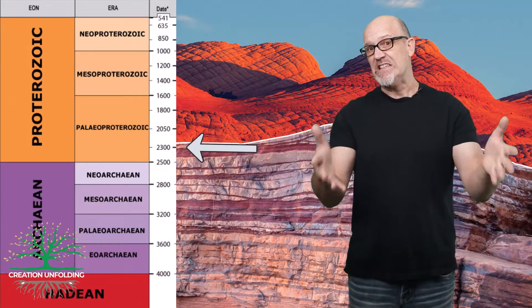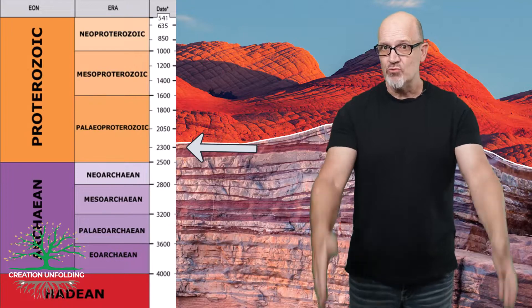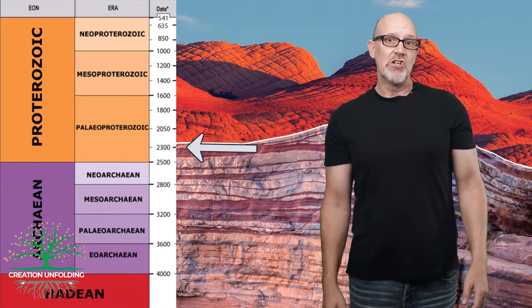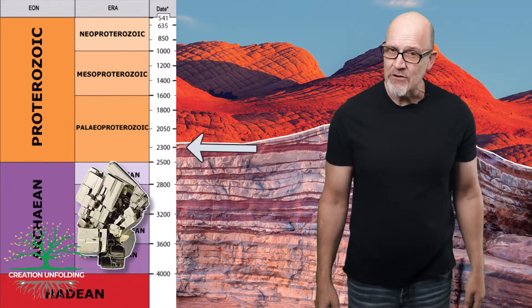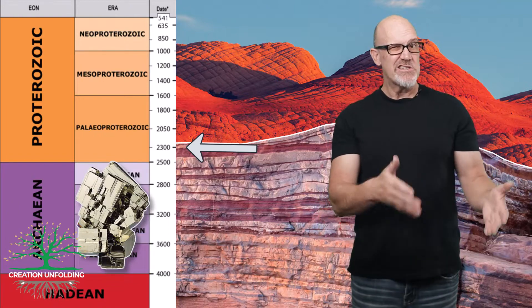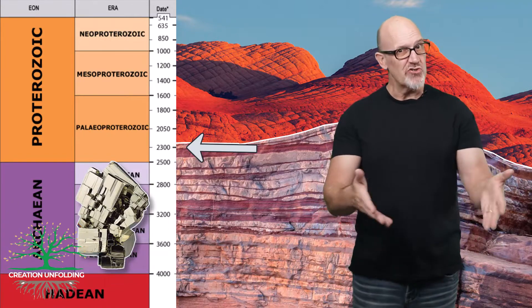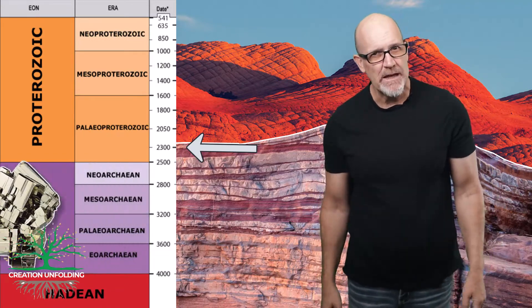Before about 2.3 billion years ago, we don't find much hematite in sedimentary rocks, although we do find a lot of non-oxidised pyrite. The presence of oxygen is certainly a good reason for this contrast in the rock record.